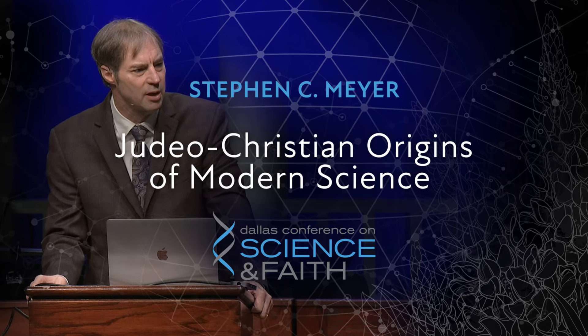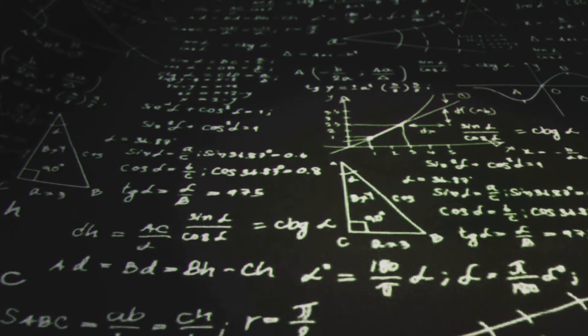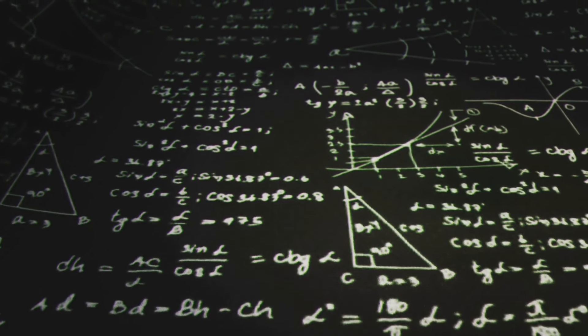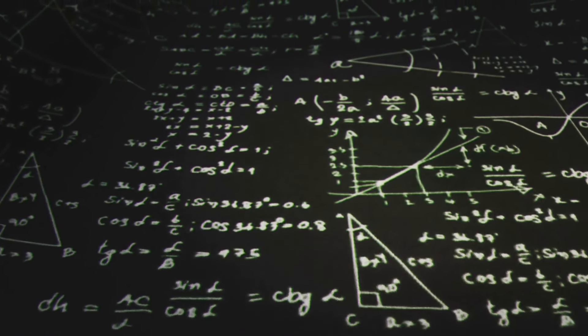Werner Heisenberg, one of the key pioneers of quantum theory, brought this centuries-old philosophical debate home and stated, I think that modern physics has definitely decided in favor of Plato. In fact, the smallest units of matter are not physical objects in the ordinary sense. They are forms, ideas which can be expressed unambiguously only in mathematical language.